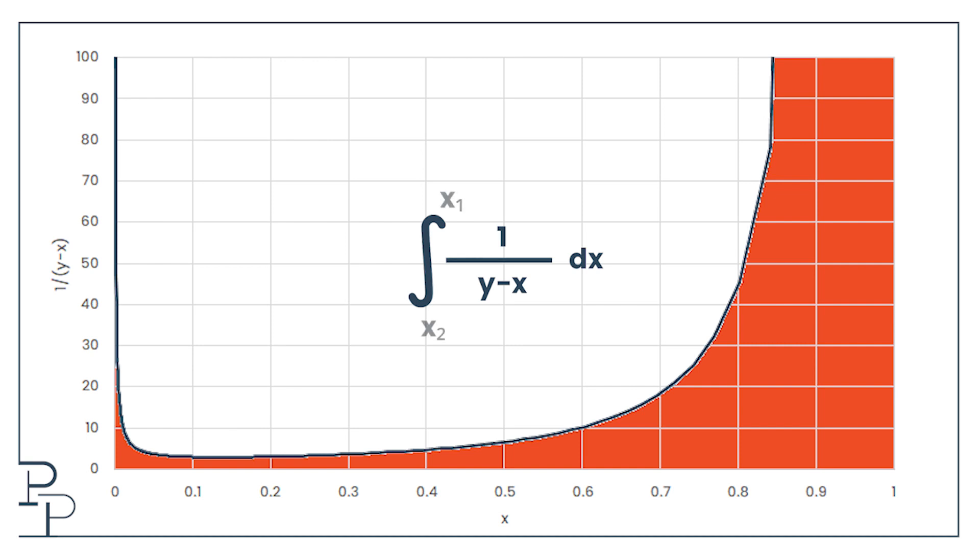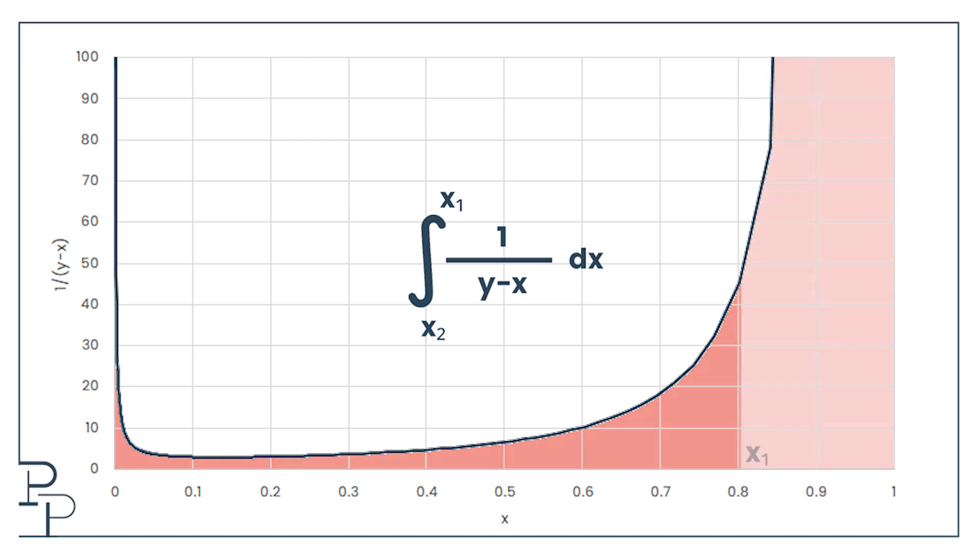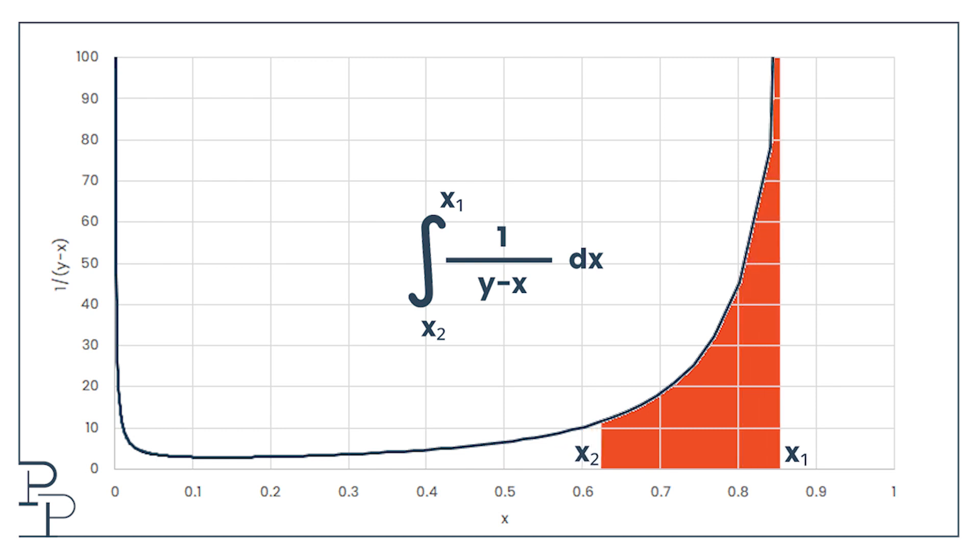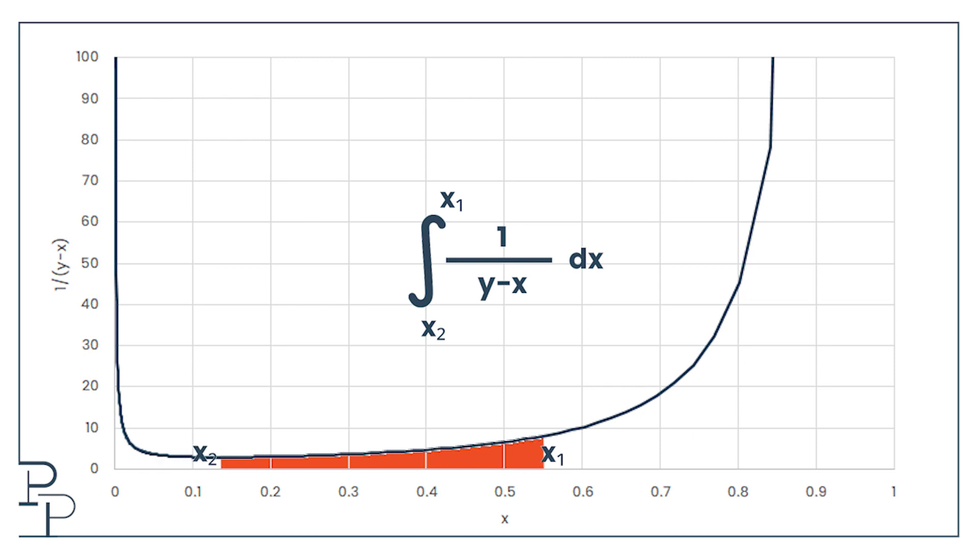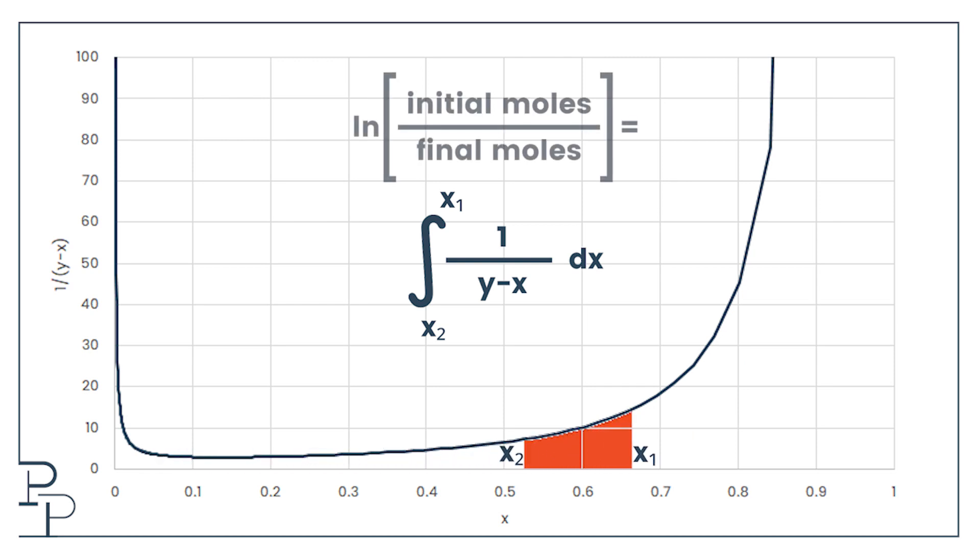x1 and x2 refer to the initial and final concentrations of ethanol in our liquid. So I can start at any concentration and end at any concentration, but doing so changes the area under the graph. This area that I'm showing in red is equal to the natural logarithm of the ratio of how many molecules I start with and the number of molecules left over in the liquid.